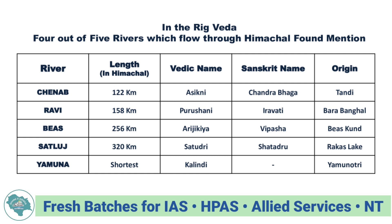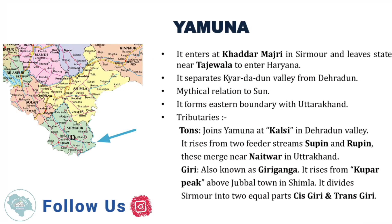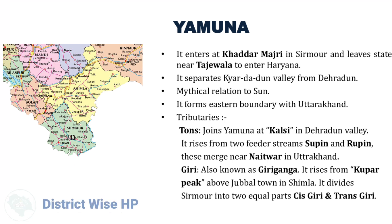Now discussing these rivers in detail, starting with Yamuna. It enters at Khadarmajri in Sirmaur and leaves the state near Tajewala to enter Haryana. This river separates the Kiaradun Valley from Dehradun. It has a mythical relation to the Sun and forms the eastern boundary of Himachal with Uttarakhand. Its main tributaries are Tones, Pabbar, Giri, Jalal, etc.